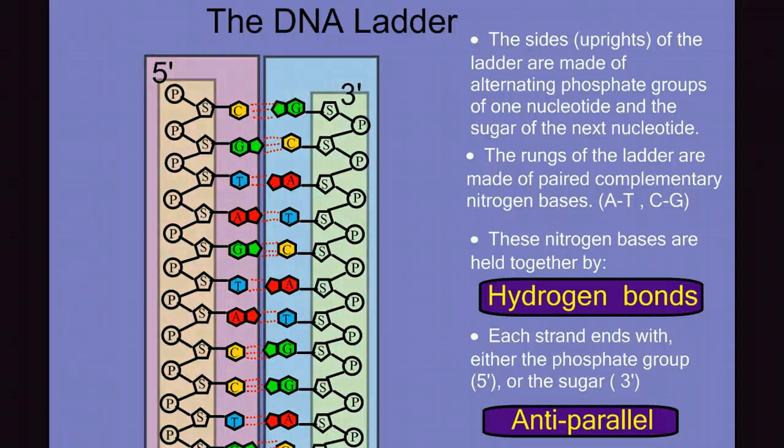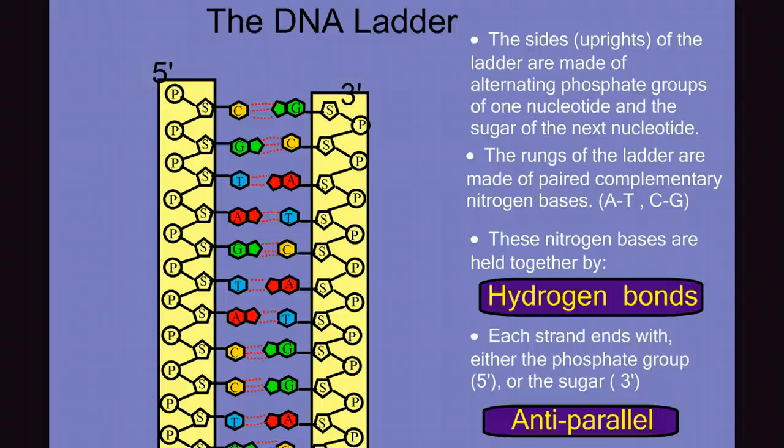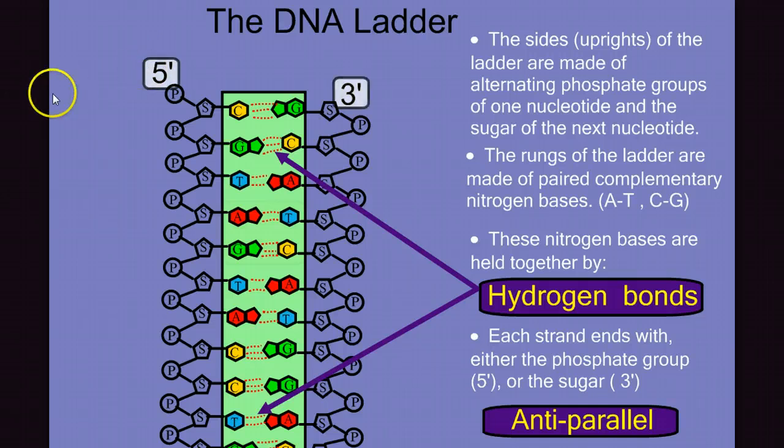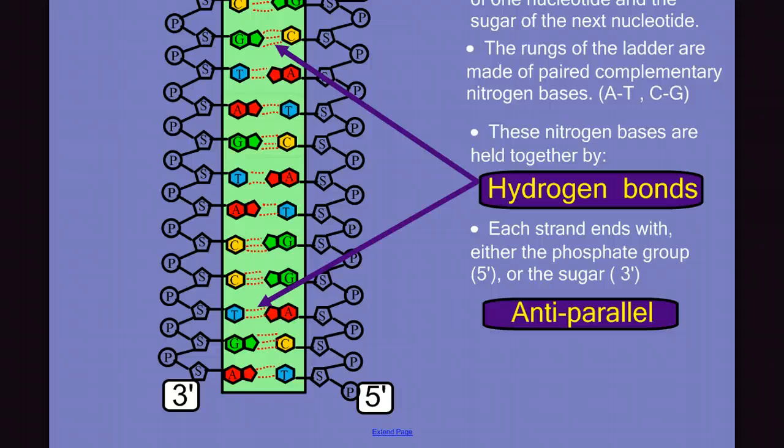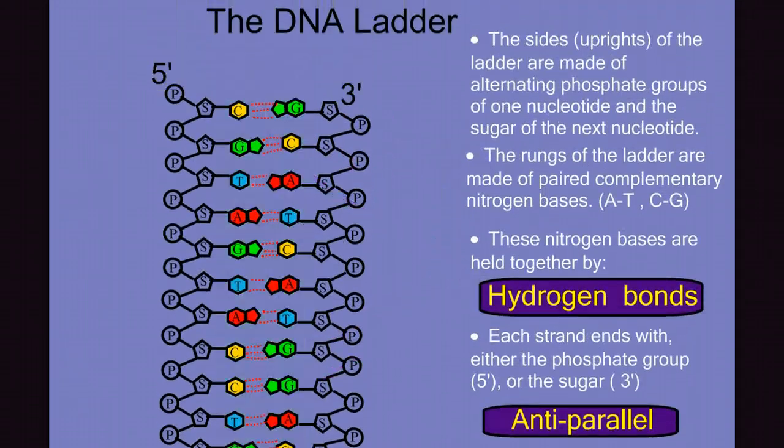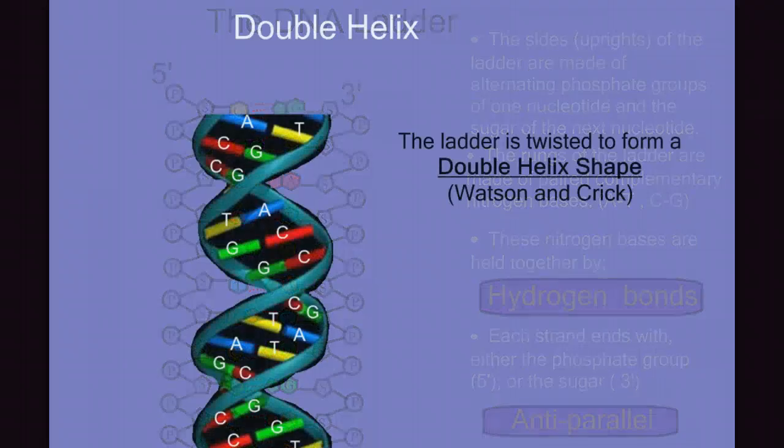These nucleotides are arranged in a double strand resembling a ladder, where the sides or the uprights of the ladder are made of alternating phosphates and sugars, while the rungs of the ladder are made of pairs of complementary nitrogen bases, adenine with thymine, cytosine with guanine, held together by hydrogen bonds. The two strands run anti-parallel to each other, with five prime and three prime ends opposite each other. And the entire molecule is twisted on itself in a shape called a double helix.